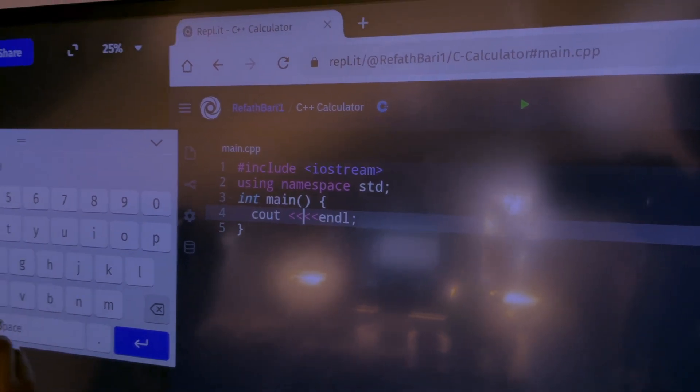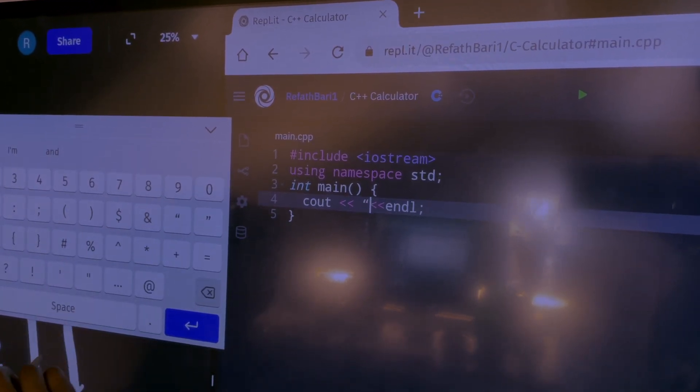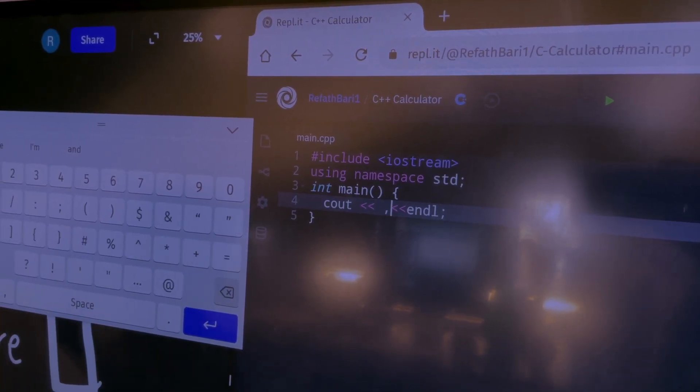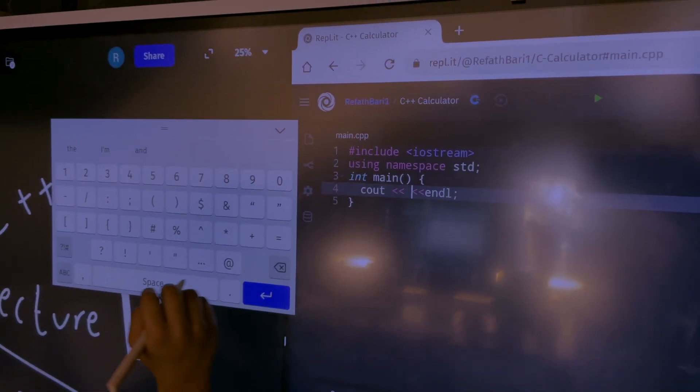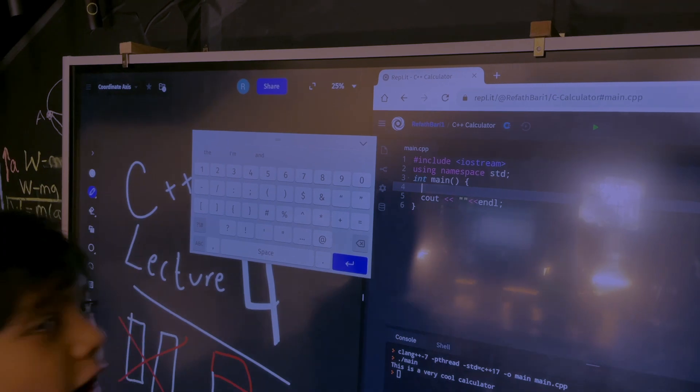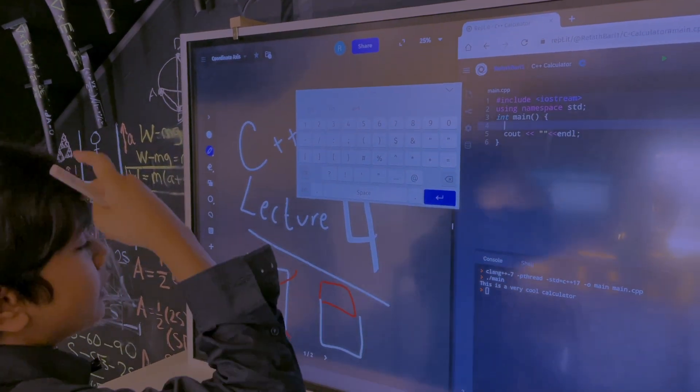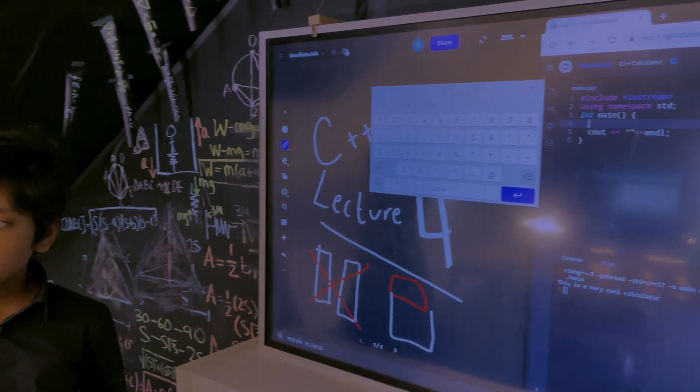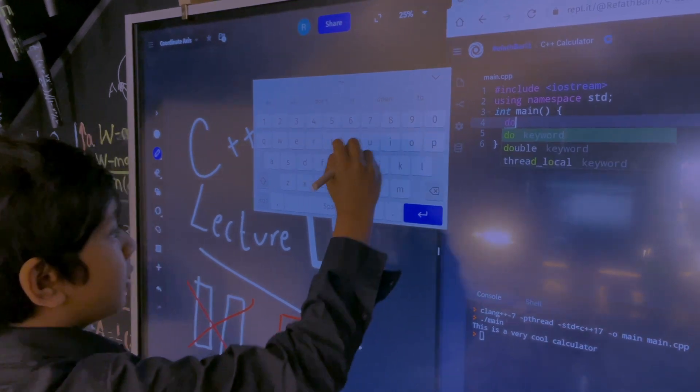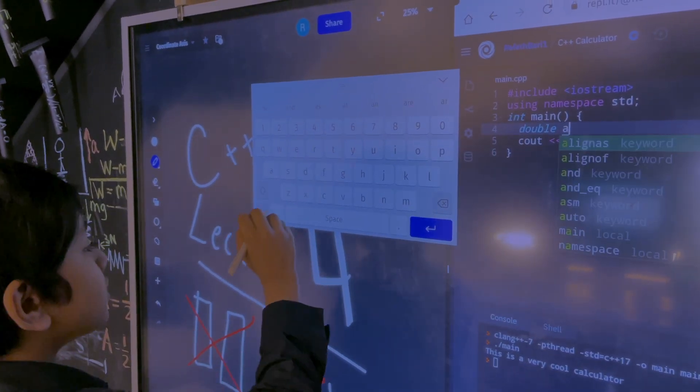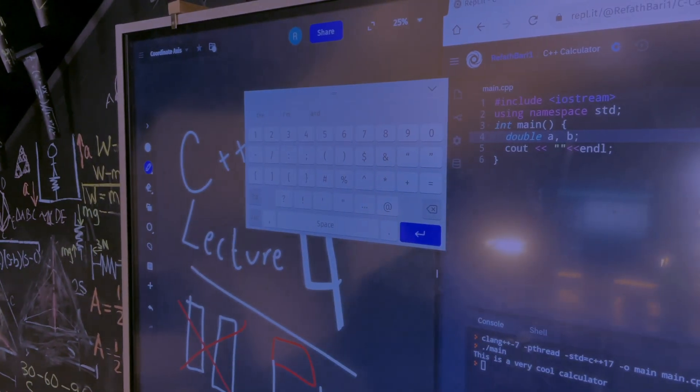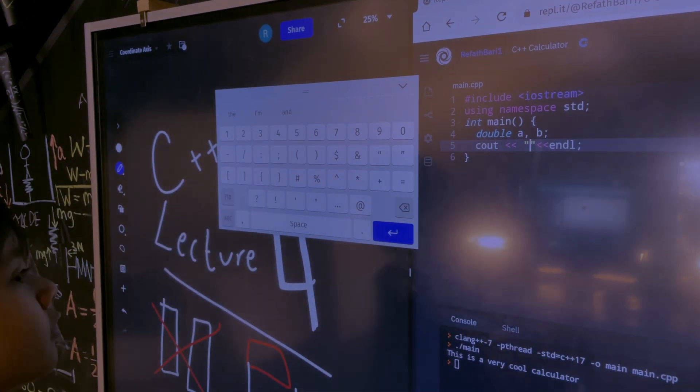So now we're going to instead actually type what operation do you want. But first, before we type any text, we always would want to do this. We have to define a variable. Or precisely two variables to add them together. So let's say we create two variables A and B.